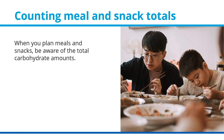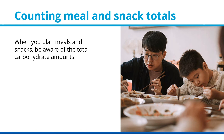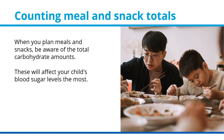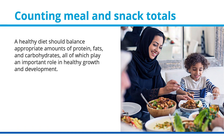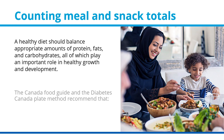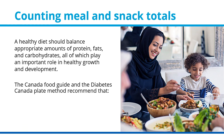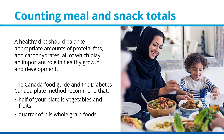When you plan meals and snacks, be aware of the total carbohydrate amounts, as these will affect your child's blood sugar levels the most. A healthy diet should balance appropriate amounts of protein, fats, and carbohydrates, all of which play an important role in healthy growth and development. The Canada Food Guide and the Diabetes Canada Plate Method recommend that half of your plate is vegetables and fruits, a quarter is whole grain foods, and a quarter is protein.